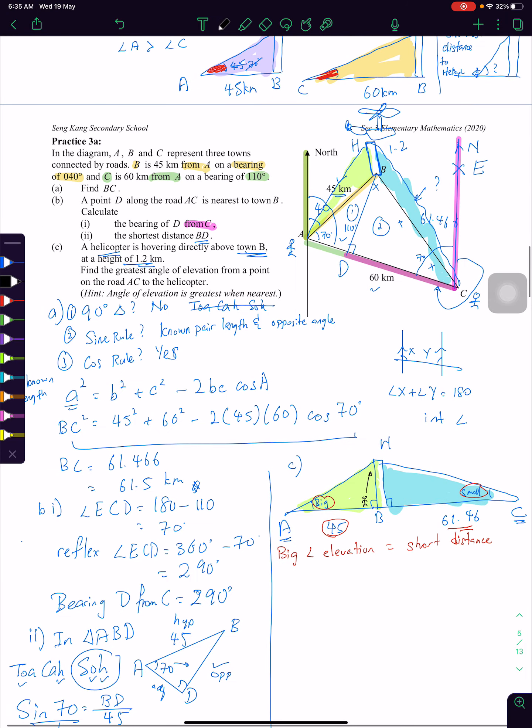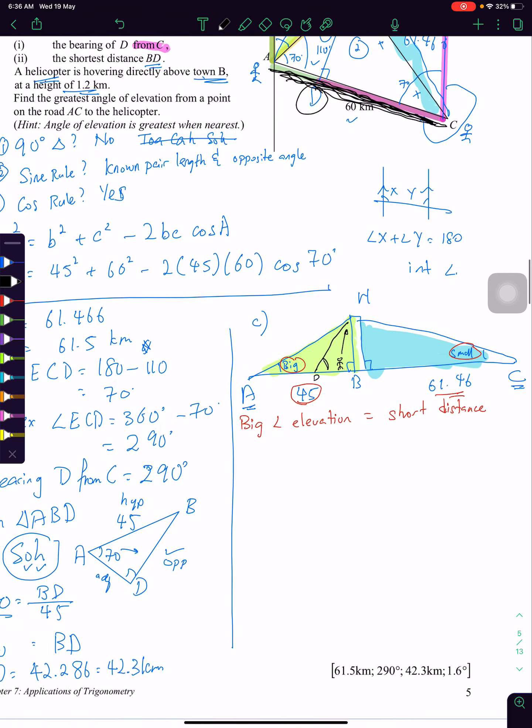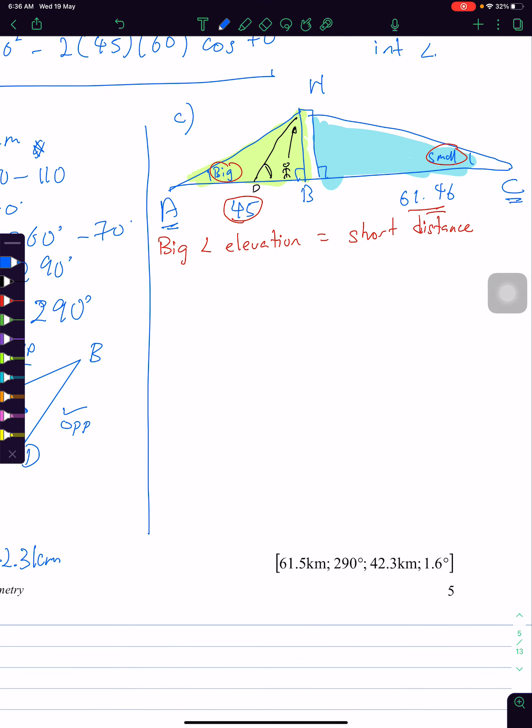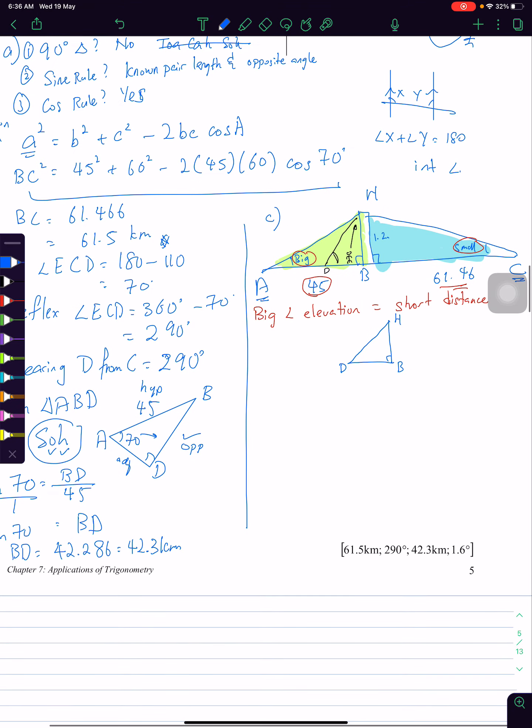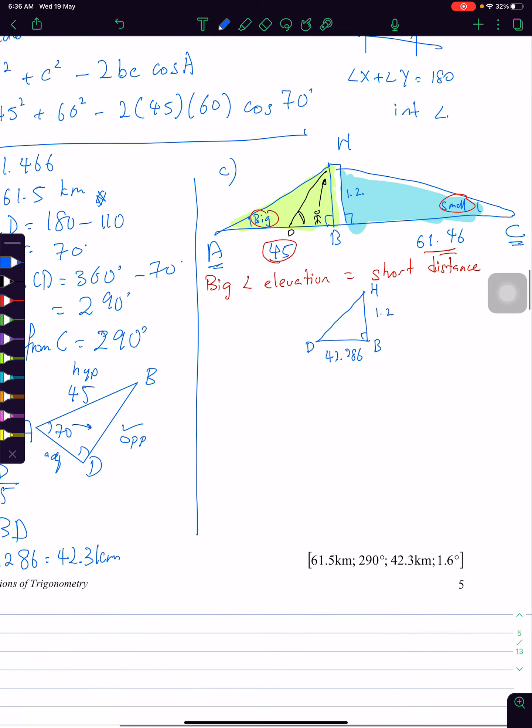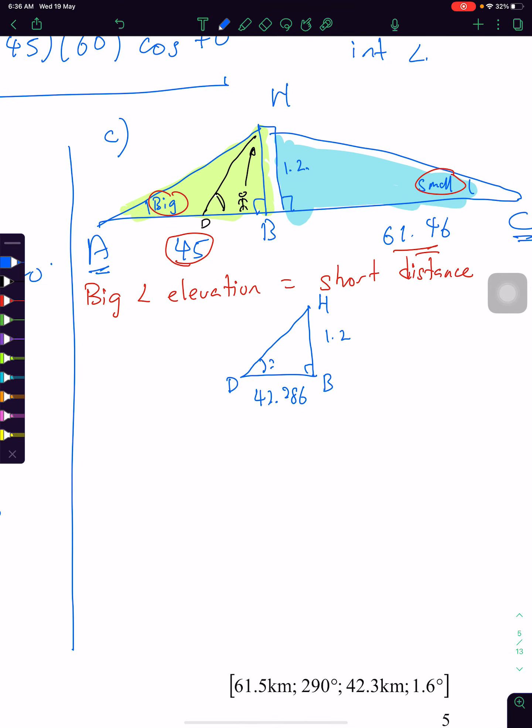But this is not the case here. So Chiu-Shen cannot walk anywhere along the triangle. He can only walk from A to C. So shortest distance will be at point D, right? Because D is the shortest distance. So D will actually give you the biggest angle of elevation. So let's look at D, yeah? So D here means I will look at the triangle H, B, and D. So let's fill in all the numbers that we have. We do have BD, BD is 42.286. Remember to use the 5 significant figures. And I want to find this angle. So this is a 90 degree. So we use SOH-CAH-TOA.